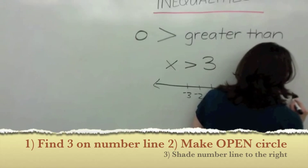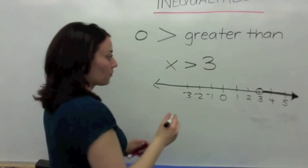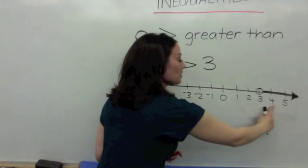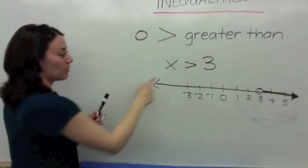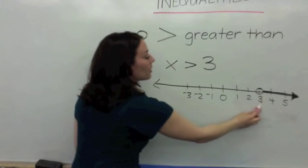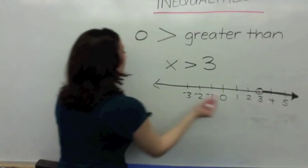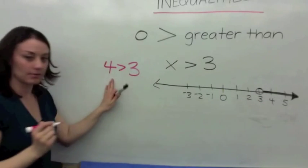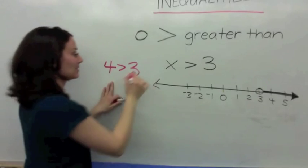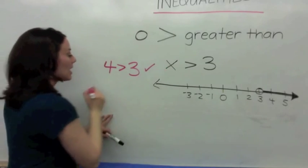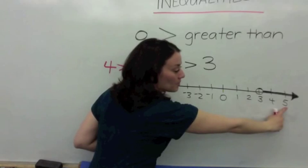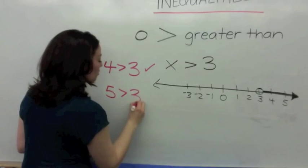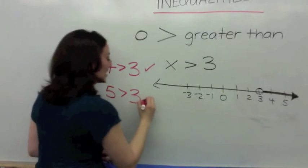X cannot be 3 — X has to be more. Let's look at some numbers we could plug in for X. Look at the number 4. Is 4 greater than 3? Is it more? Yes, that is correct. What comes next? 5. Is 5 greater than 3? Yes, it is.